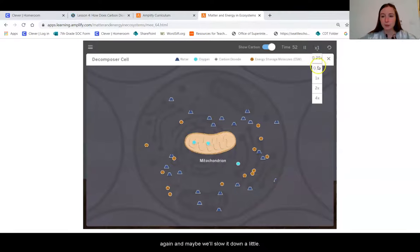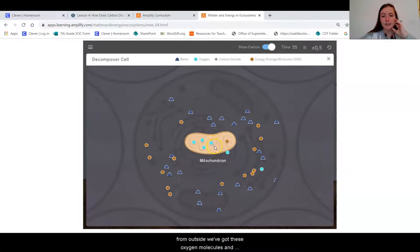So let's watch again, and maybe we'll slow it down a little. We've got these oxygen molecules and energy storage molecules from outside, which we found out the decomposers get from eating things like poop and dead material, which is kind of crazy. So they've got their energy storage molecule, and we read in our article that to use the energy, they have to break them down. And the process they do that with is called cellular respiration.